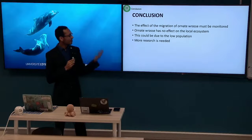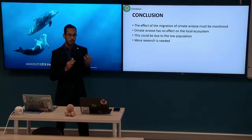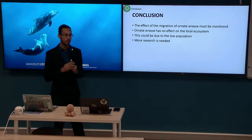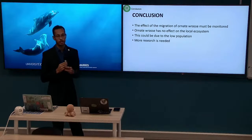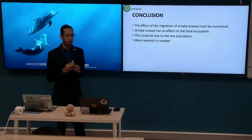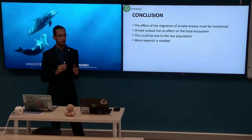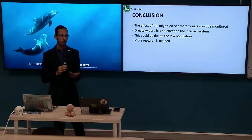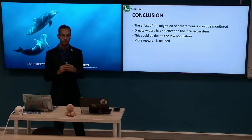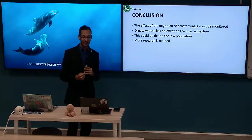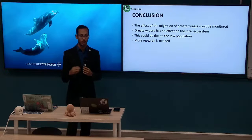In conclusion, the effect of the migration of Ornate Wrasse must be monitored, as invasive species are becoming a major problem throughout the oceans due to shipping lanes, connectivity, and other anthropogenic factors. It is important to monitor the movement of the Ornate Wrasse to help protect ecosystem health within the Mediterranean. Within the Lerins ecosystem, there was no observable effect of the Ornate Wrasse on the local ecosystem. Therefore, we could not prove our hypothesis and were not able to disprove our null hypothesis — that there is no observable effect of the Ornate Wrasse. This may be due to the low Ornate Wrasse populations observed, and more research is definitely needed.